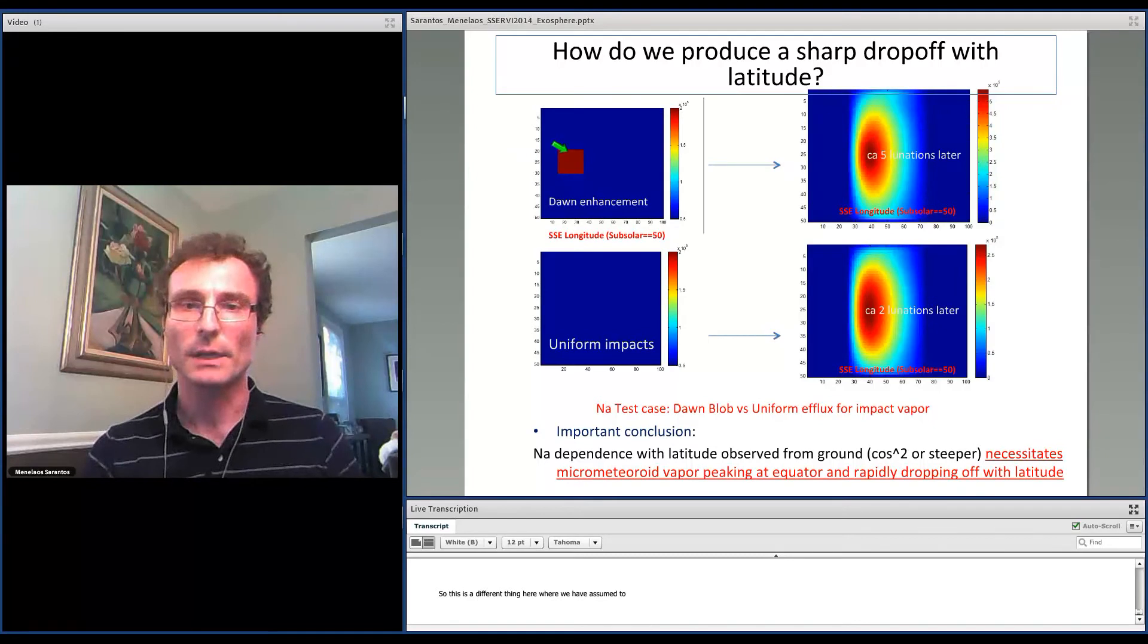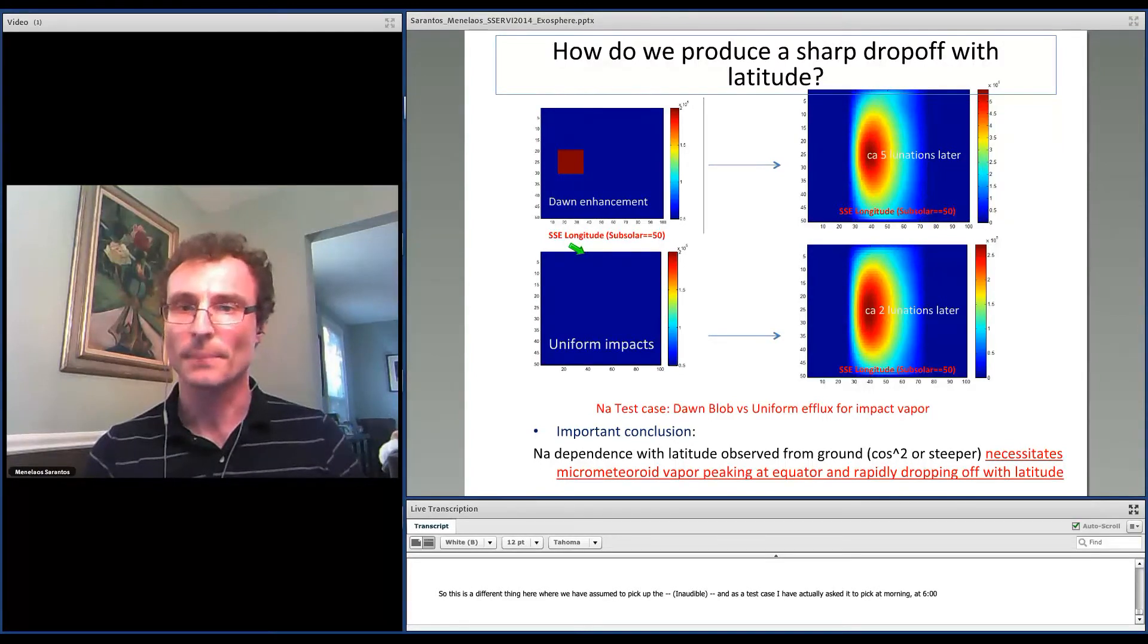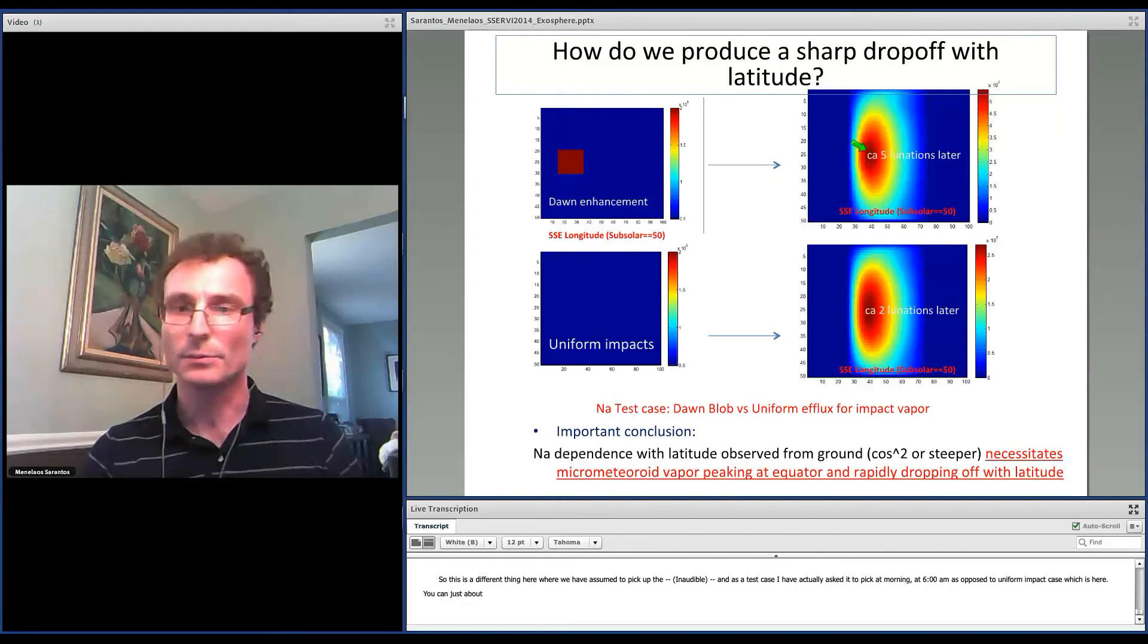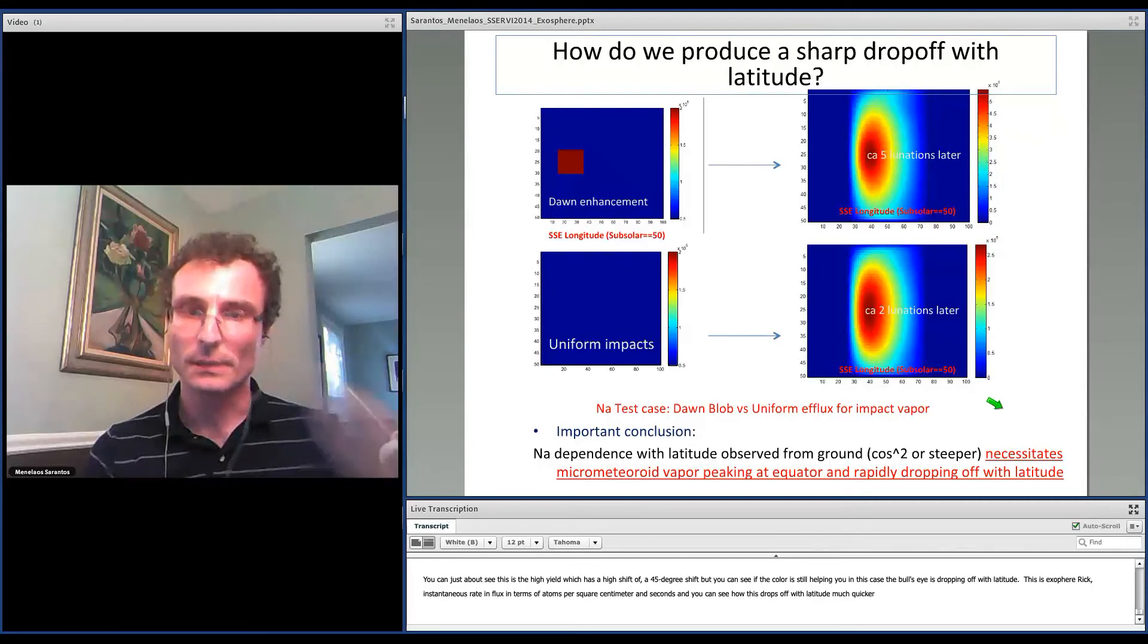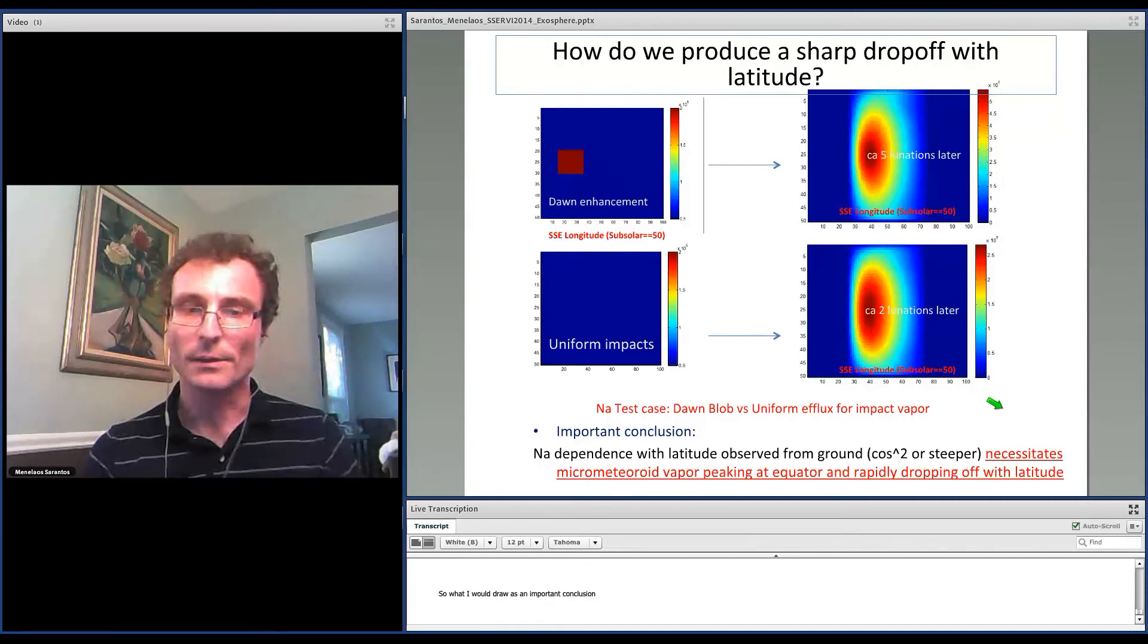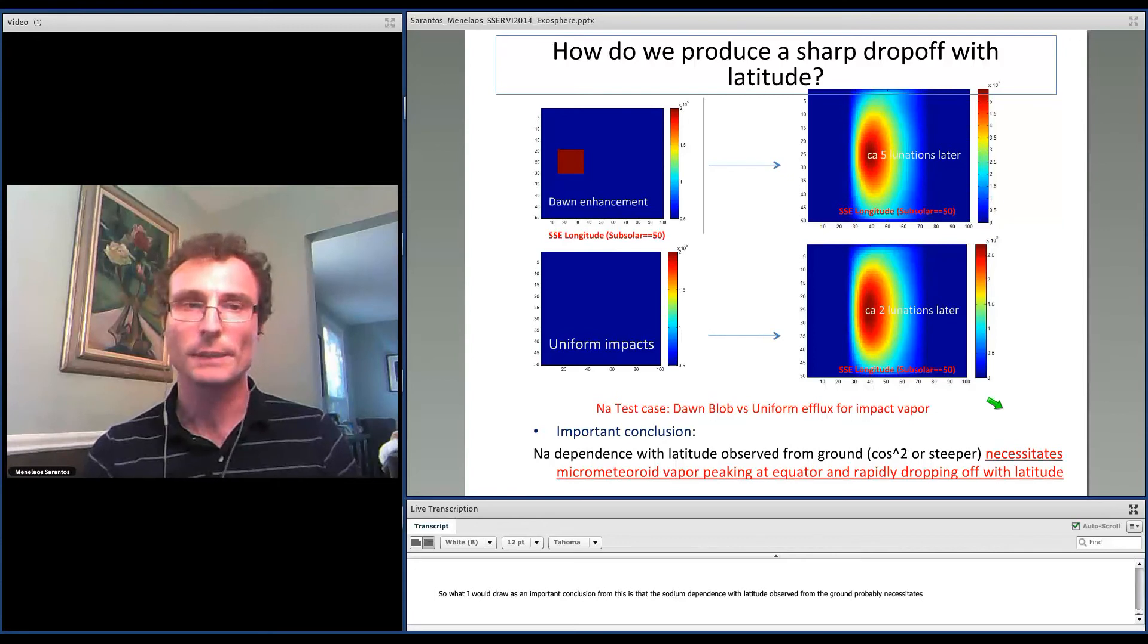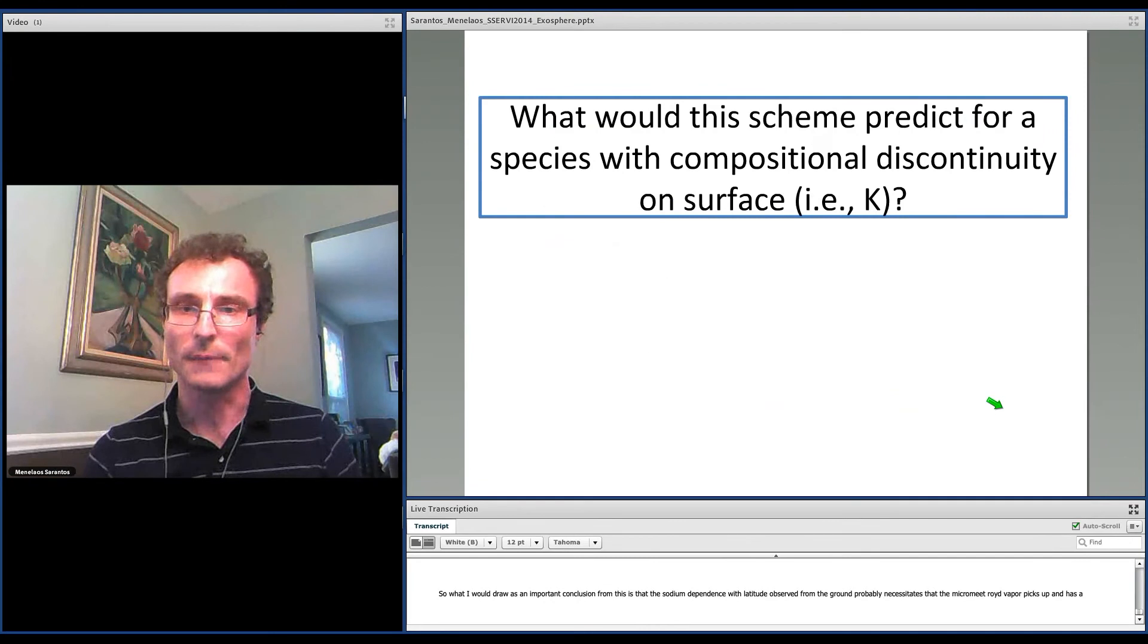So this is a different run over here in which we've assumed the impact vaporization to peak at the equator. And as a test case, I've actually asked it to peak at morning, at 6 a.m., as opposed to the uniform impact case. And you can see the bullseye is more rapidly dropping off now with latitude. This is exospheric—this is actually instantaneous PSD rate flux in terms of atoms per square centimeter per second. And you can see how this drops off with latitude much quicker. So what I would draw as an important conclusion from this is that the sodium dependence with latitude observed from the ground probably necessitates that the micrometeoroid vapor peaks at the equator and has a profile that reduces at high latitudes.